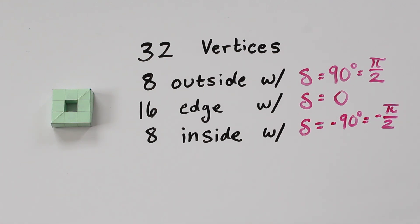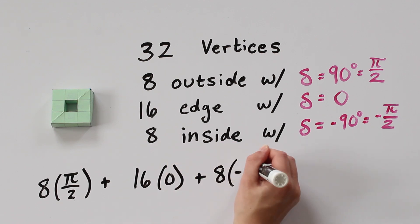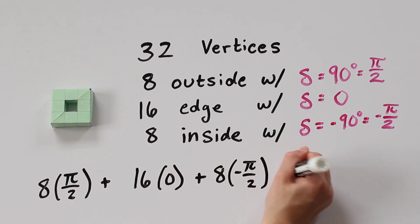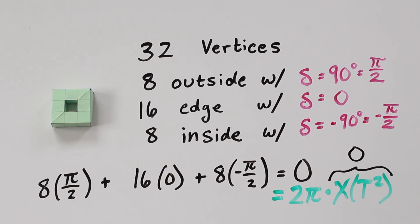We then total the angle deficiency at every vertex. We have 8 times π/2, plus 16 times 0, plus 8 times negative π/2, which gives 0. And this is the same as 2π times the Euler characteristic of the torus, which we know is 0. So the Gauss-Bonnet theorem works in this case.